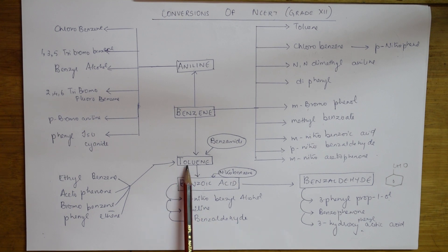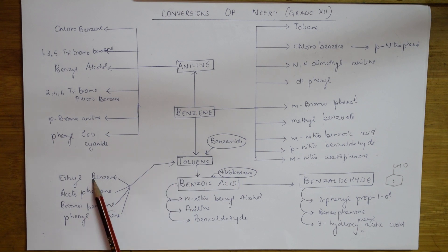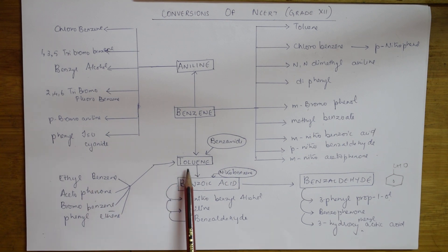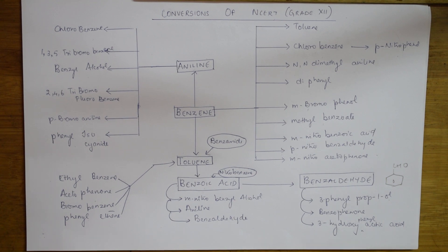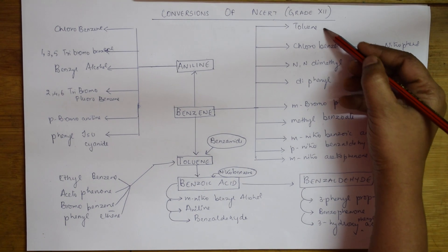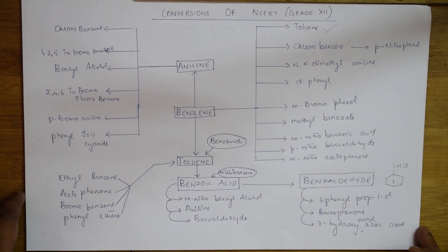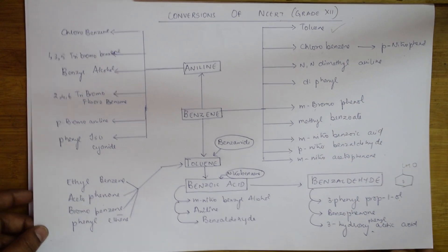After that, you also have conversions of ethylbenzene, acetophenone, bromobenzene, and phenylethyl to toluene. I want everybody to note these aromatic conversions headings. I'll be starting with the actual conversions from tomorrow. I want this to be ready with you so that whenever I complete a section, you can put a tick on the paper. Prepare like this and keep it ready.